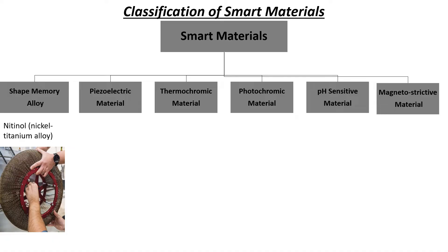For example, Nitinol — a nickel and titanium alloy. Very recently, NASA's research center developed a new tire for future Mars rover missions made from a mesh of Nitinol wires, which is a shape memory alloy based on nickel-titanium. This allows the tire to return to its original shape after undergoing deformation.